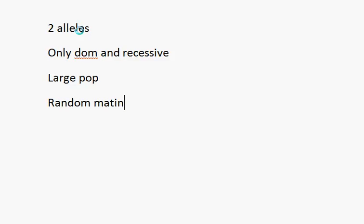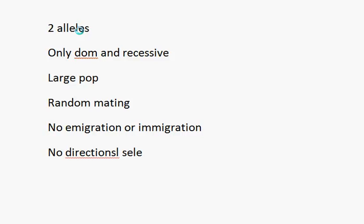There are a few assumptions we have to make in order for Hardy-Weinberg to work, such as you've only got two alleles. Only dominant and recessive. You must have a large population. There must be random mating. There must be no emigration or immigration. And finally, there must be no directional selection.